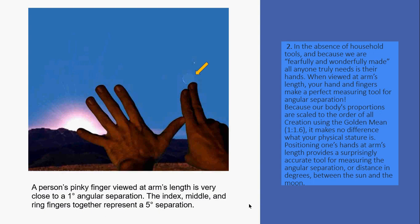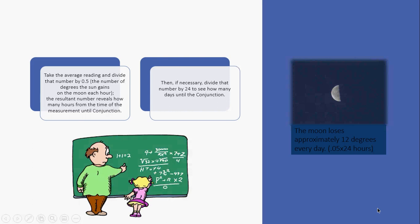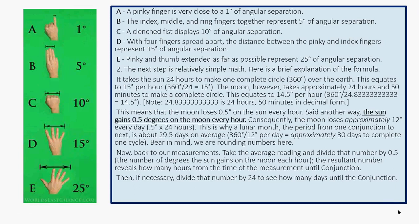A person's pinky finger viewed at arm's length is very close to one degree of angular separation, and the index, middle, and ring fingers together represent a five-degree separation. Take the average reading and divide that number by 0.5 — that's the number of degrees the sun gains on the moon each hour — and the result reveals how many hours from the time of measurement until conjunction. If necessary, divide that number by 24 to see how many days until conjunction. The moon loses approximately 12 degrees every day. More detail on the math is available in the link provided.